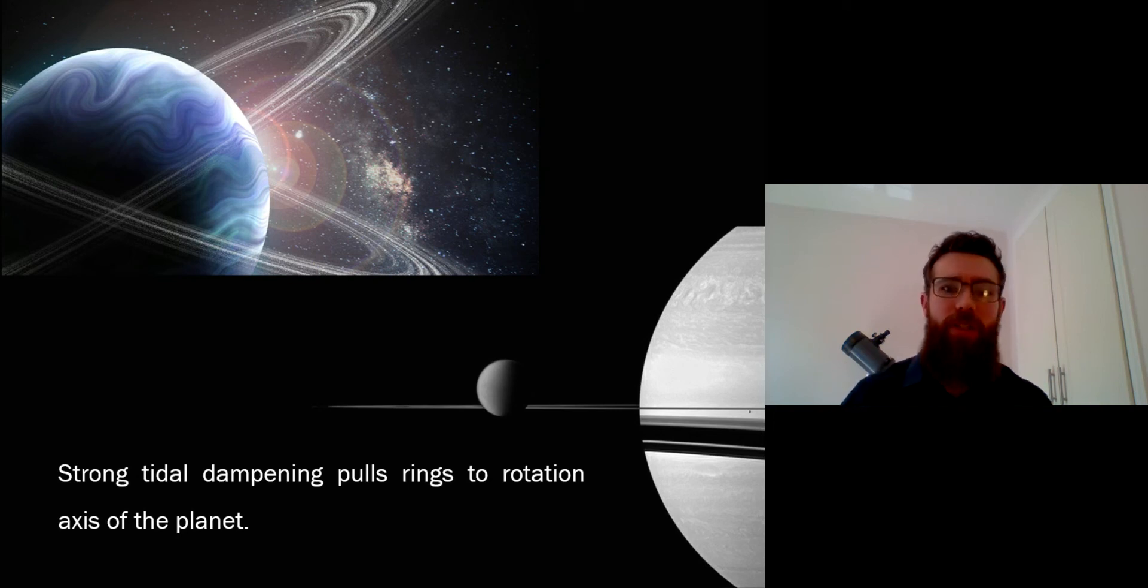Gravitationally, as the rings are orbiting around there's a difference in the gravitational force and it very quickly basically dampens that movement - that inclination - so it matches the equator of the planet. So even if it did form inclined, it's very quickly going to be pulled to that rotation of the planet.